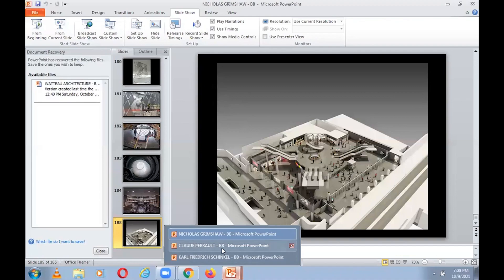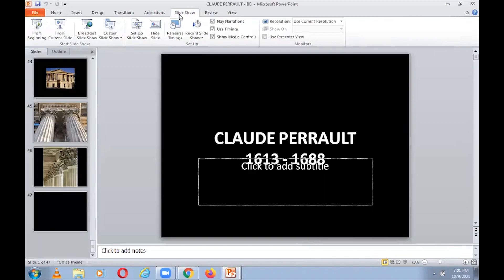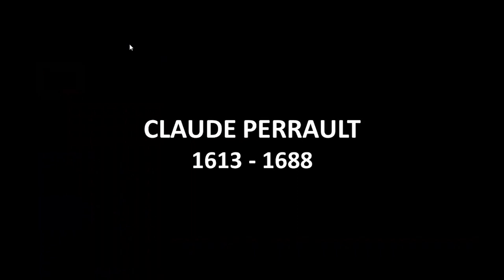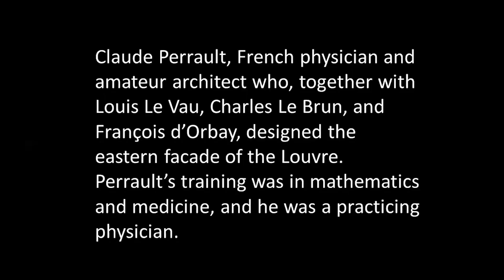Now let's go to the second architect I talked about today — it's a shorter presentation about Claude Perrault. I talked about Claude Perrault not too long ago, but in the case of an architect who died, I talked twice: on the day of birth and on the day he died. So this is the second time I talk about him. Claude Perrault died in 1688 and he's one of the authors — maybe the main one — of the eastern facade of the Louvre Museum in Paris. Here is a statue of Claude Perrault; he lived in the 17th century.